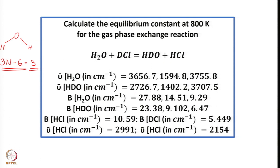HDO being a non-linear molecule also has 3 normal modes of vibration. The rotational constants for water are A = 27.88, B = 14.51, C = 9.29 cm⁻¹ — it is a non-linear rotor. Both H₂O and HDO are non-linear rotors, so you require all three rotational constants A, B, C. HCl and DCl are linear, so you require only one rotational constant B each, and for a diatomic molecule there is only one normal mode of vibration. With this data, we now proceed to evaluate the equilibrium constant.